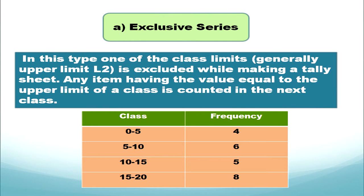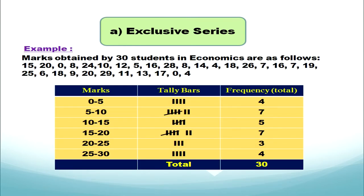Let's verify these features with an example: 0 to 5, 5 to 10, 10 to 15, 15 to 20. The upper limit is the next lower limit, the class interval gap is the same, and the value 5 will not be included in the first class — it will be included in the next class. The question gives marks obtained by 30 students in economics.